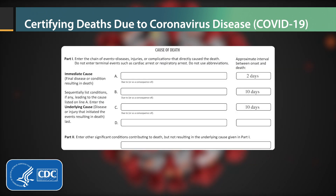The immediate cause was acute respiratory distress syndrome, so that should be on Line A, as a consequence of pneumonia, which should go on Line B. The underlying cause was COVID-19, so it should be reported on Line C, the lowest line used in Part 1.